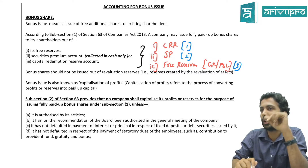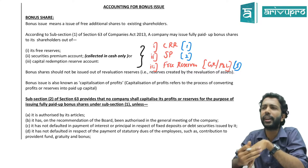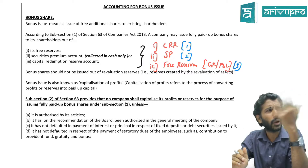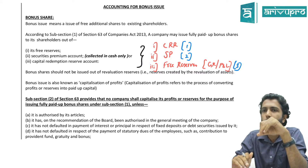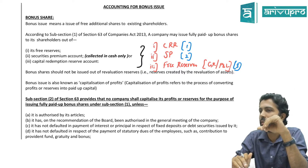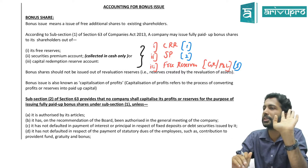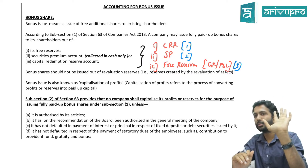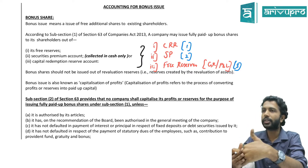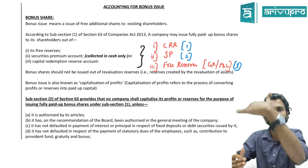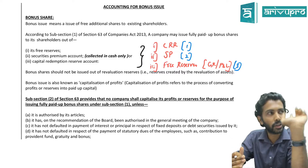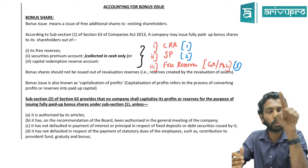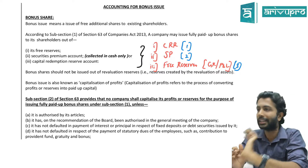I have one question — why priority? Why should I prioritize? Everything is shown under reserves and surplus only in the balance sheet. So why should I give the bonus in that particular pattern? That is the question.